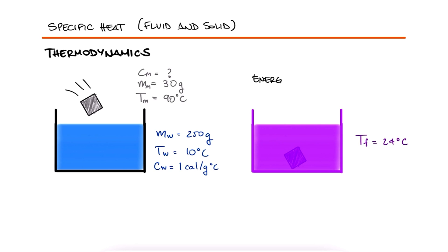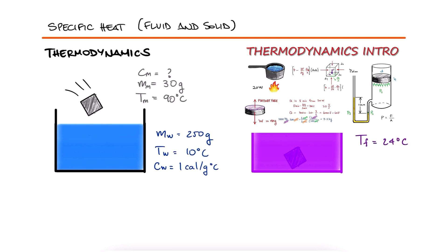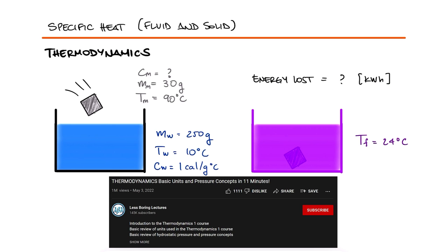What is the amount of energy the piece of metal lost in kilowatt hours? This is the third example for the Thermodynamics Units and Pressure Basics 11-minute lecture video. The links to that lecture, the other examples on this topic, and the other lectures of the Thermo course are found in the description below.